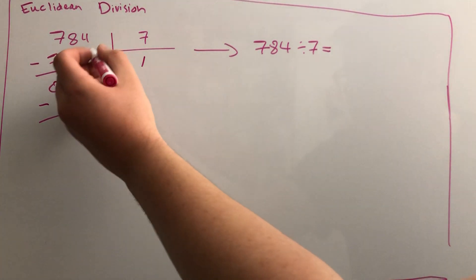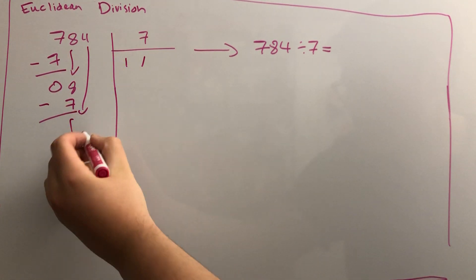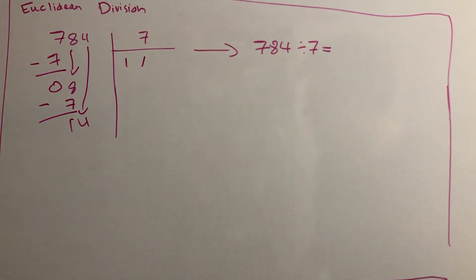The final question we ask ourselves is: how many times does 7 go into 14? Well, 7 times 2 is 14, so 7 goes into 14 two times. We write the 2 right here and subtract 14 from 14.